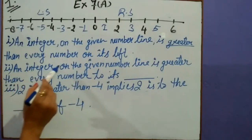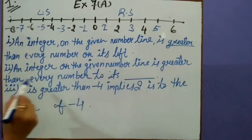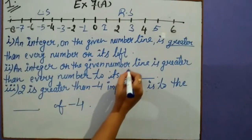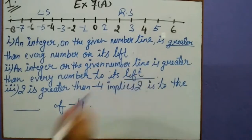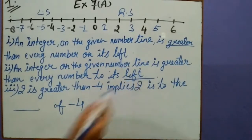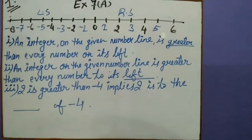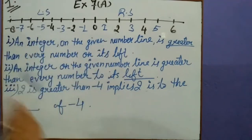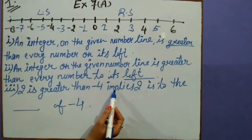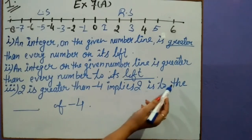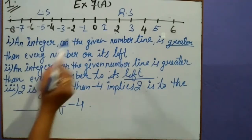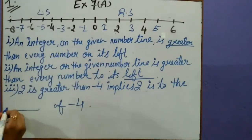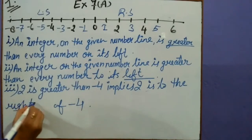Second: An integer on the given number line is greater than every number to its left side. Either you write 'left' or 'left side,' both are correct. Third: 2 is greater than minus 4. We can see here that 2 is on the right side of minus 4. So we will write here: right.